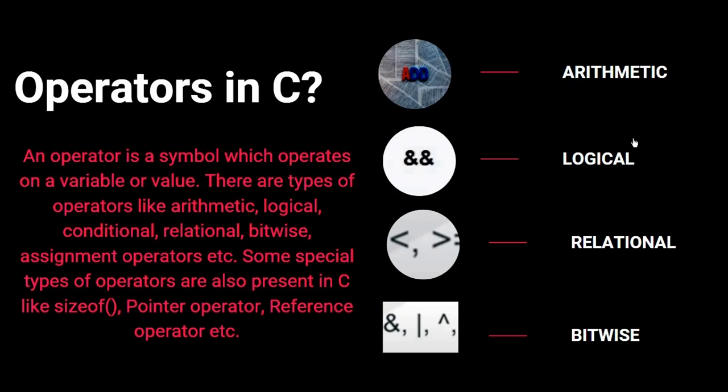The relational operations involve the comparison of two operands, which can be less than or equal to, greater than or equal to, and so on. Then the bitwise operations, where bit by bit logical operations are performed. There are also special operators in C: the sizeof operator, which returns the size of each data type, the pointer operator, and the reference operator.